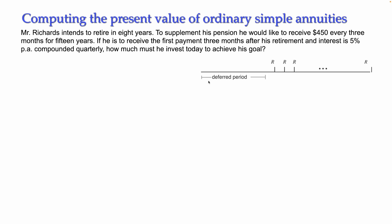There will be a period without any payment, so the payments are delayed. This period when there are no payments but the interest is working is called a deferred period. After that there will be a time t in which the payments are happening, and we are going to compute the present value of all these payments at the beginning of the deferred period. An annuity like this with a deferred period at the beginning is called a deferred annuity.